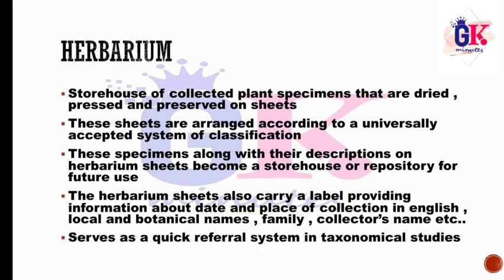In herbarium sheets, all details of the specimen are added. It also carries a label providing information about the date and place of collection, English name, local name, botanical name, family, and collector's name. These details are recorded on the herbarium sheet and it serves as a quick referral system in taxonomical studies.